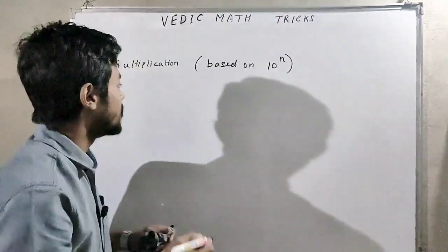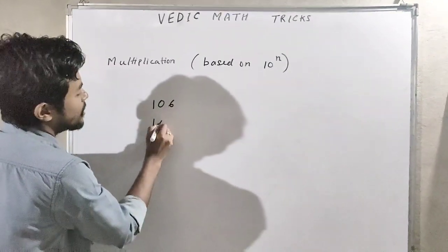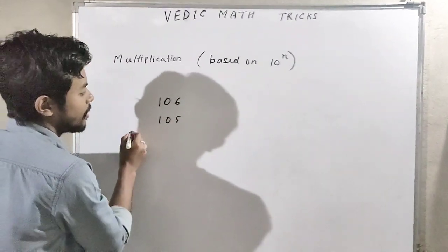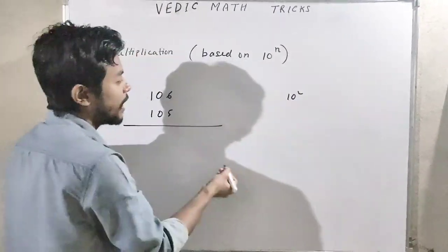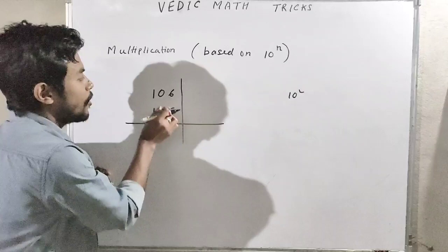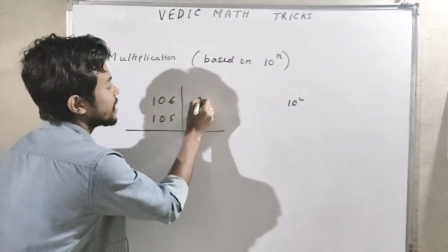So here we have to multiply and here we have to subtract or add. That is, 98 into 88, we get the result as 8624. Let us take another example. Suppose we are going to multiply 106 by 105.